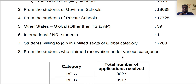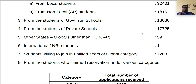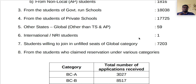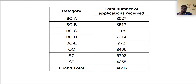Category-wise application breakdown: BCA — 3,027 applications; BCB — 8,517 (very tough competition); BCC — 118 (least competition, that is why only 1% reservation is allocated); BCD — 7,214; BCE — 972; OC — 244; SC — 6,708; ST — 4,255. Total valid applications: 34,217.